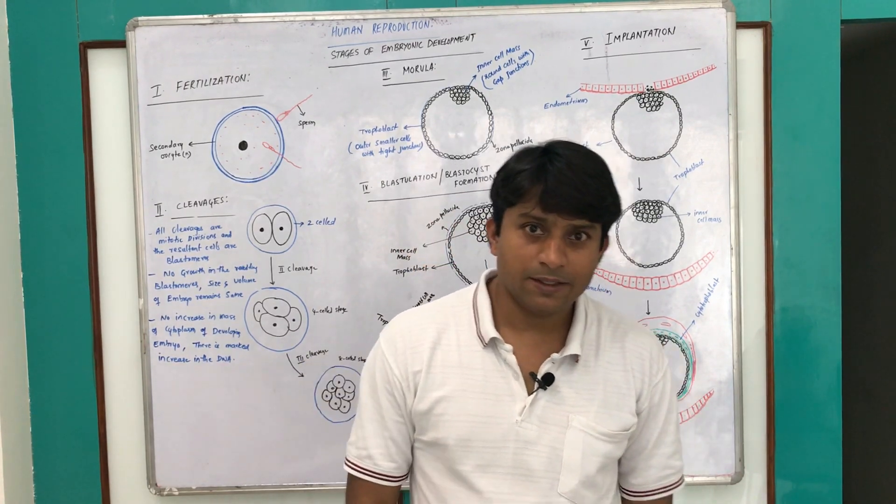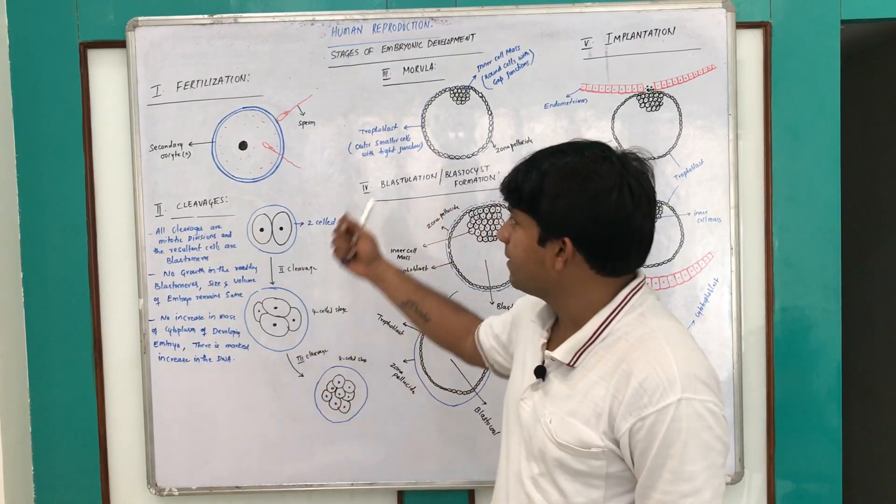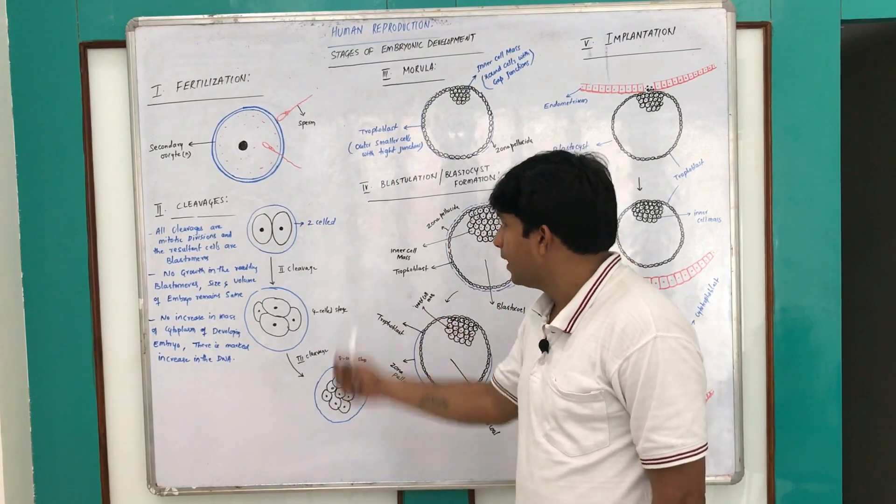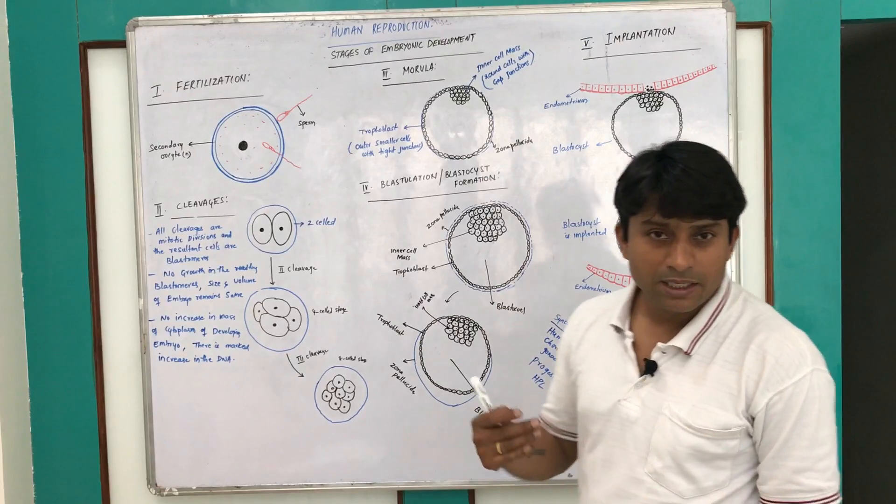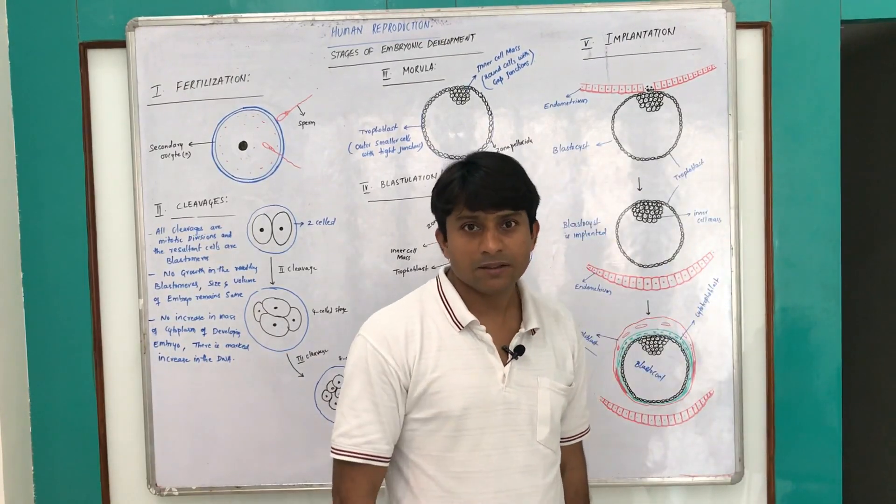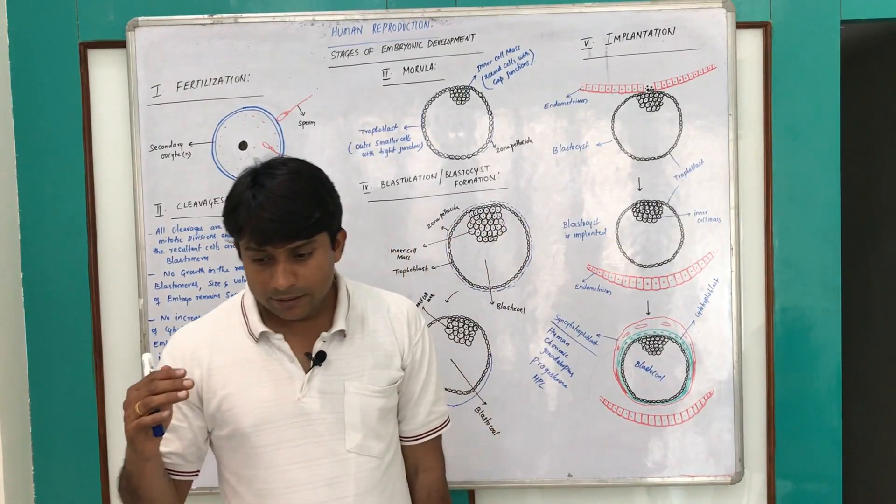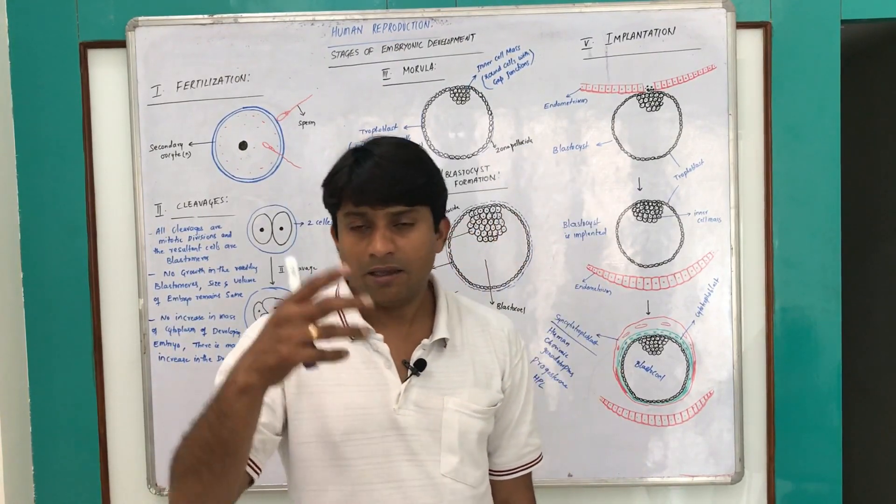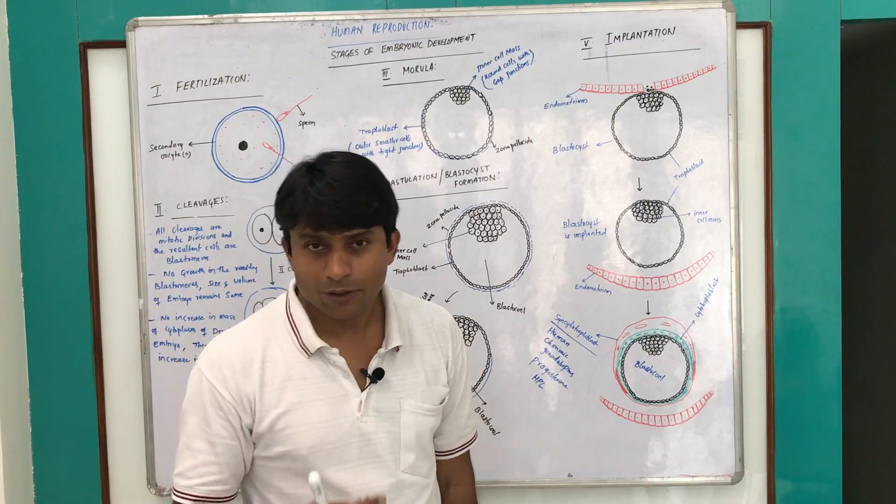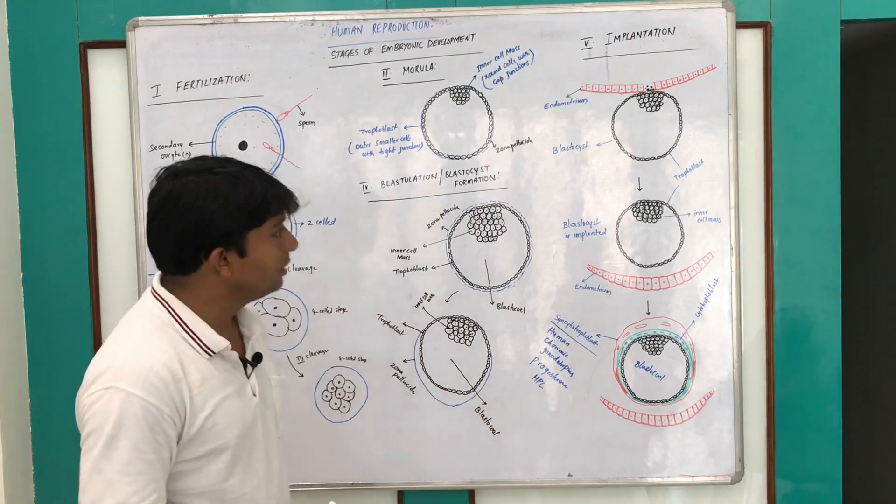Human embryonic development includes stages like fertilization, cleavages, morula formation, blastocyst formation, implantation, and finally gastulation. In the process of gastulation, three different germ layers are formed which differentiate and form various organs. So first we start with fertilization.